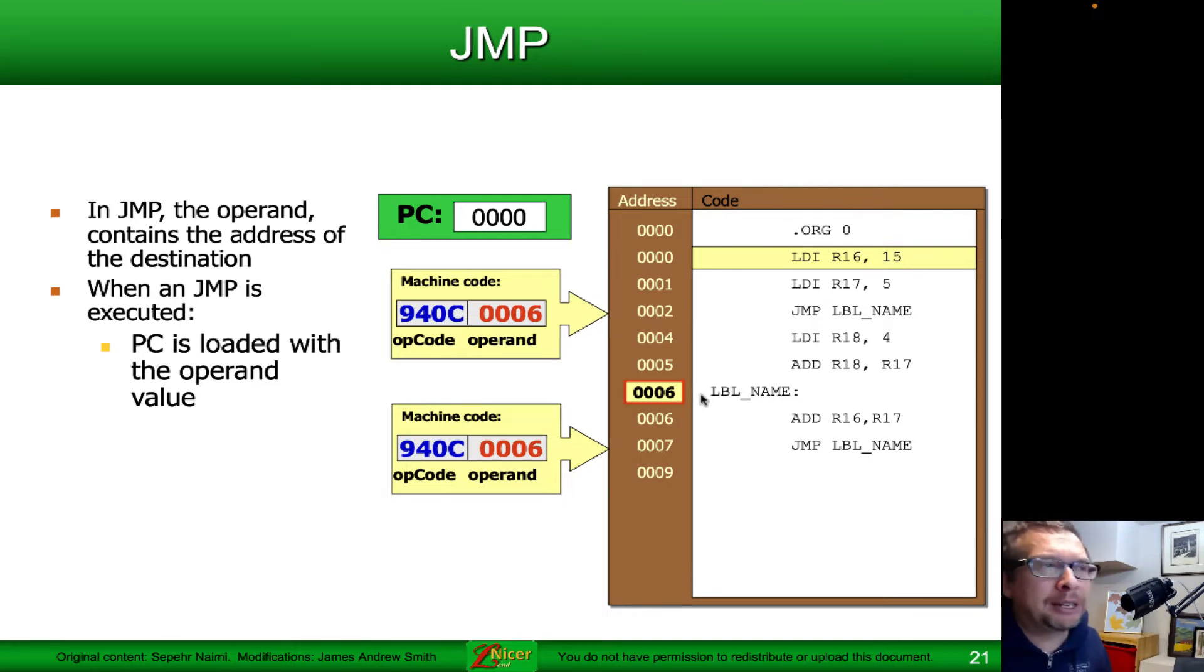Let's take a look at how this actually works. In the jump, the operand contains the address of the destination where we want to go to. When a jump is executed, the program counter is going to be loaded with the value of the operand. Take a look at the assembler code right here. We have a jump label at address number 6, but we're starting at location 0 in memory, where there's a load immediate. Then there's another load immediate, and then after that we do the jump. So we load 15 into register R16, then we load 5 into register R17.